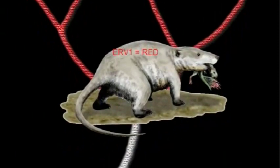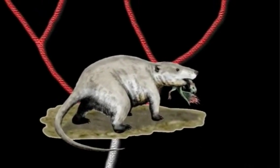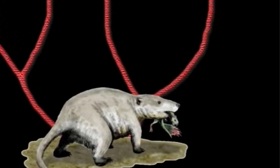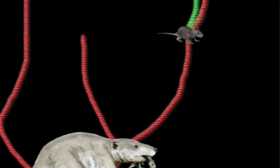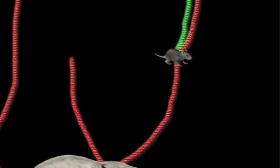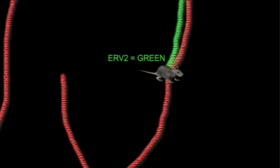Fast forward 30 million years. Different lineages have evolved and derived from the original common ancestor, and there are now many different types of mammals in existence, all carrying ERV-1. A small rodent, let's call it Secundus Mammalius, is the common ancestor of mice and rats, and once again is infected by a new species-specific retrovirus that becomes endogenous. This is ERV-2.